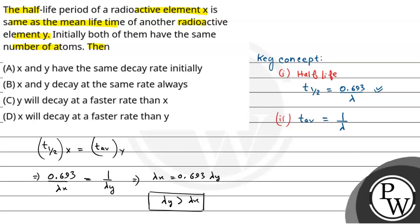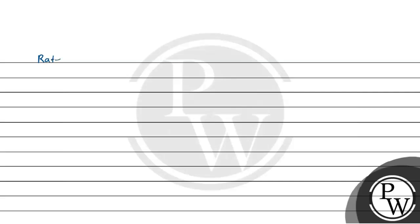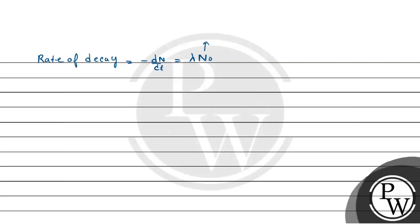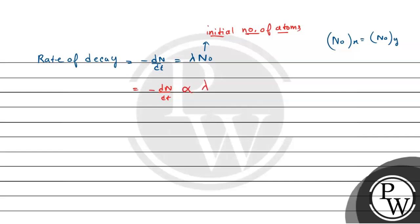Now, what we know is that the rate of decay — that is minus dN by dt — is equal to lambda into N-naught, where N-naught is the initial number of atoms. And the question states that the initial number of atoms in case of X is equal to the initial number of atoms in case of Y. So the rate of decay is proportional to lambda, the decay constant.